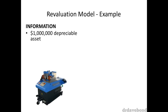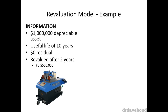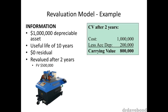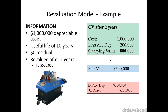Turning now to a longer example. We have a depreciable asset purchased for $1 million, with a 10-year useful life and a zero residual. After two years, it is revalued to $500,000. The depreciation expense is $100,000 per year, so after two years the total accumulated depreciation is $200,000. Deducting this from the cost gives a carrying value of $800,000. This is greater than the fair value of $500,000, so we have a downwards revaluation of $300,000. Before the revaluation entry is made, accumulated depreciation is cleared out by debiting accumulated depreciation and crediting the asset — this doesn't alter the balance sheet but makes the asset account easier to work with.